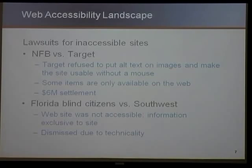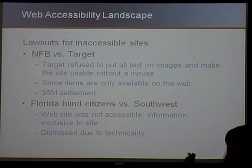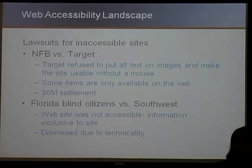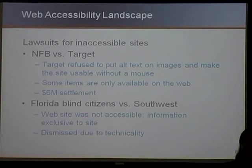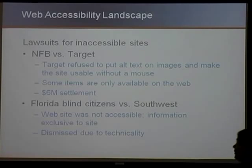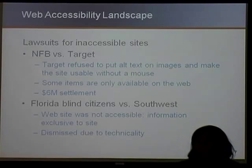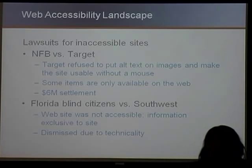There was a landmark lawsuit filed in 2006 by the National Federation for the Blind against Target. The NFB claimed that Target had information on their site available to sighted users but not available to people with vision impairment, and Target was not interested in making the minimum changes required to make their website usable by assistive devices. The judgment was in favor of the National Federation for the Blind, and it ended in a $6 million lawsuit. In addition, Target needed to work with the NFB to make their site accessible, at an additional cost.